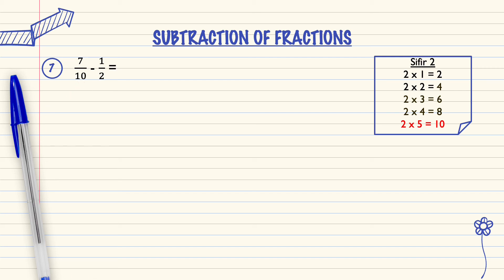7 over 10, we rewrite it. 2 will be multiplied by 5 to become 10. If the denominator is multiplied by 5, the numerator must also be multiplied by 5.